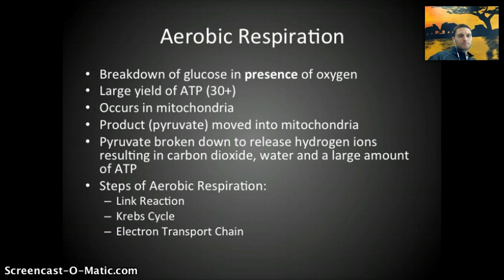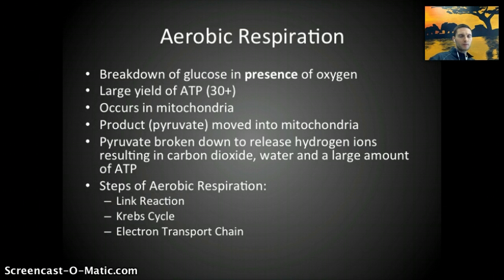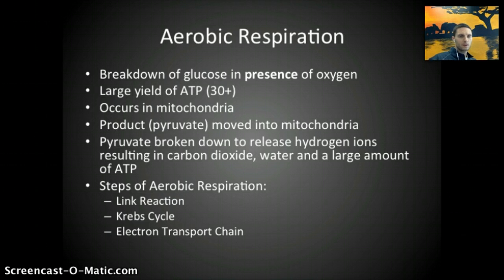In aerobic respiration, it's still the breakdown of glucose, but this time in the presence of oxygen. This can yield a large amount of ATP — about 30 to 34 or more. It occurs primarily in the mitochondria, and the product of glycolysis, pyruvate, is moved into the mitochondria. Pyruvate is broken down to release hydrogen ions, releasing carbon dioxide, water, and a large amount of ATP. There are multiple steps to aerobic respiration: glycolysis, then the link reaction, Krebs cycle, and electron transfer chain.